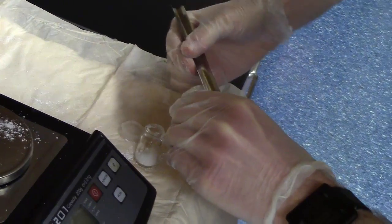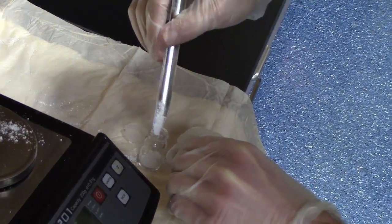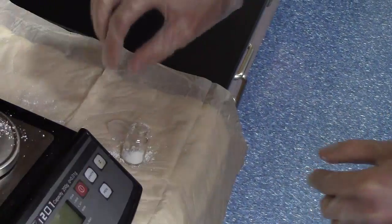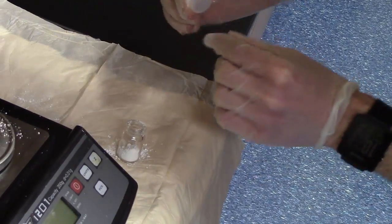Transfer all the powder from the weighing bolt into the glass vial, taking care not to spill any of the powder on the work surface. Then, seal the glass vial with a vial cap.